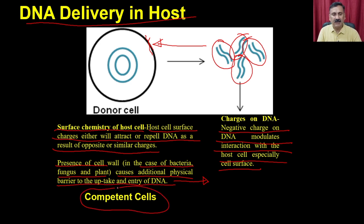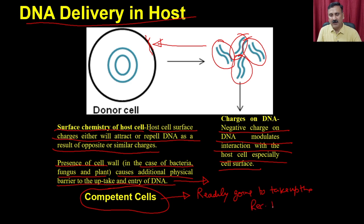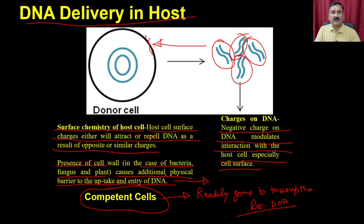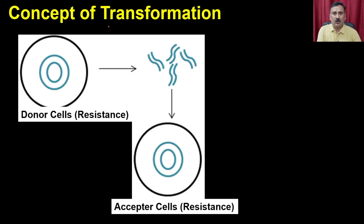A competent cell is a cell that is readily going to take up extracellular DNA. Naturally, cells are not going to take up DNA, but you can treat them in such a way that changes the surface chemistry so that they will take up the DNA. This process is called transformation — the process by which a DNA fragment from one cell is taken up by another cell.